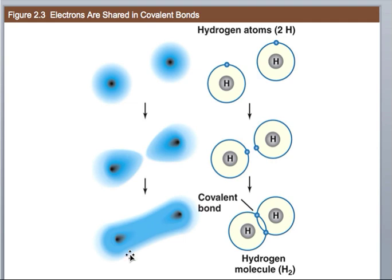At any given time, they could be anywhere between these two atoms' nuclei. That's the basis of the covalent bond.